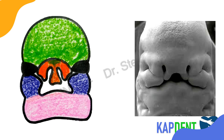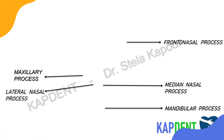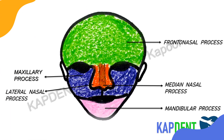Now let's look at the structures developing from the respective processes of the face. The frontonasal process gives rise to the forehead. The lateral nasal process gives rise to the ala of the nose. The median nasal process gives rise to the tip of the nose. The maxillary process gives rise to the cheeks.